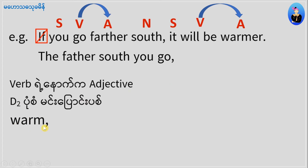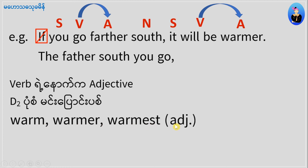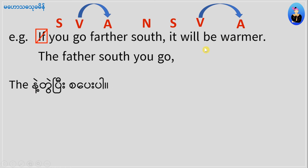One degree: warmer — one form. Positive degree, comparative degree, superlative degree. Degree D2, D3. Adjective degree. When we don't know how to put the adjective in our language, we'll be able to put it in our language. The first thing is the adjective that we can use, as we use in our language. This is the word 'warmer.'